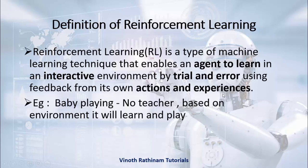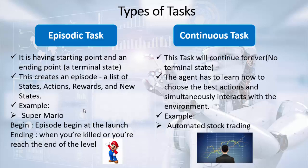Reinforcement learning can be classified into two types of tasks. One is episodic task, another is continuous task. In the episodic task it has a starting point and an ending point, called a terminal state. Example: the Mario game, where the episode begins at launch and ends when you are killed or reach the end of the level. In the continuous task, the task continues forever — there is no terminal state. The agent has to learn how to choose the best action and simultaneously interact with the environment. The best example is automated stock trading in share markets, where the agent keeps running until we decide to stop it.